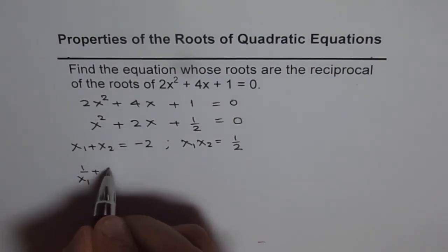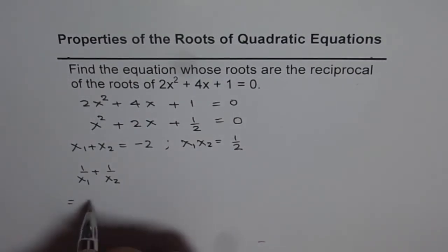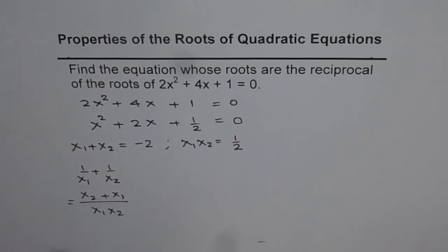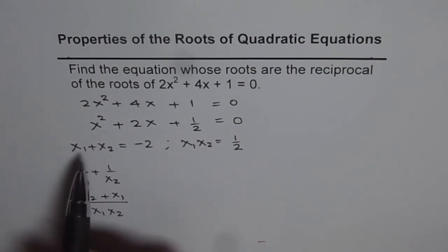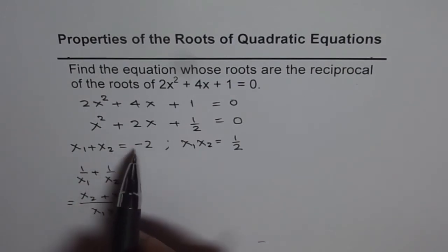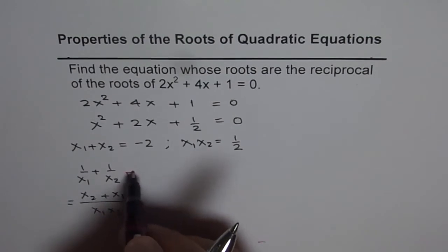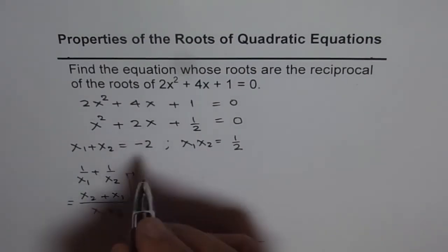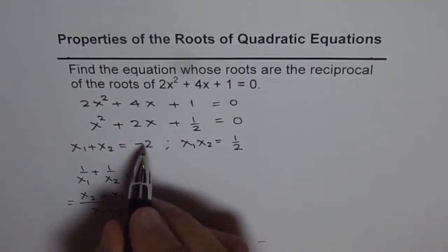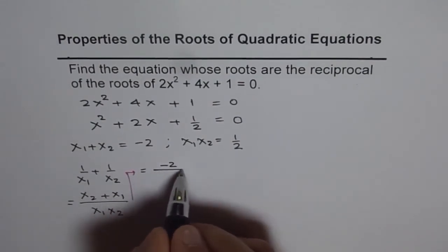That means 1/x₁ + 1/x₂. Now that is equal to (x₂ + x₁)/(x₁x₂). Now since we know x₁ + x₂ is -2, so we can solve here.